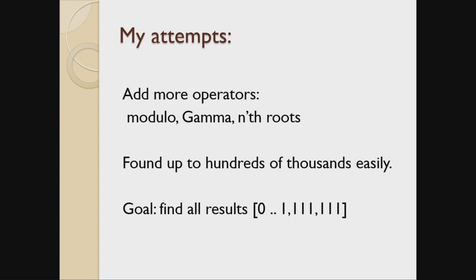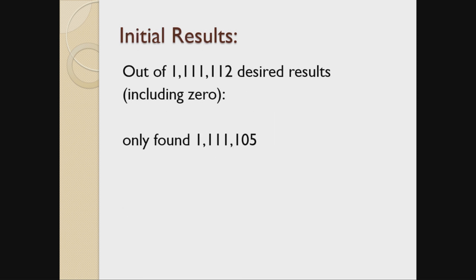The program immediately found results way up into the hundreds of thousands as I was developing it, so I set a goal of finding all the way up through 1,111,111. But once I got my program running, out of all those results, it only found up to 1,111,105. So close.